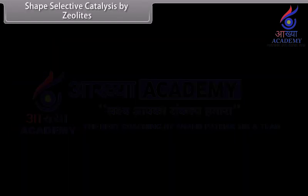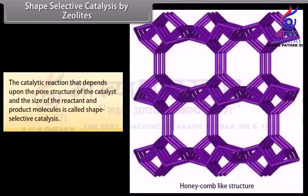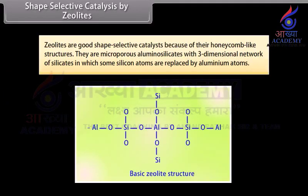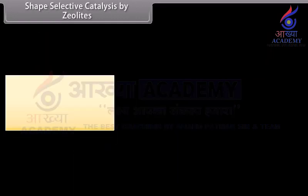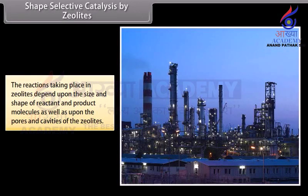Shape-selective catalysis by zeolites. The catalytic reaction that depends upon the pore structure of the catalyst and the size of reactant and product molecules is called shape-selective catalysis. Zeolites are good shape-selective catalysts because of their honeycomb-like structures. They are microporous aluminosilicates with a three-dimensional network of silicates in which some silicon atoms are replaced by aluminum atoms. The reactions taking place in zeolites depend upon the size and shape of reactant and product molecules as well as upon the pores and cavities of the zeolites. Zeolites are used as catalysts in petrochemical industries for cracking of hydrocarbons and isomerization.